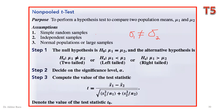Other assumptions are the same as the pool t-test: simple random sample, independent sample, and normal populations or large sample — any one of these two conditions must be fulfilled. The fourth assumption is that the two population standard deviations, which are unknown, are not equal.